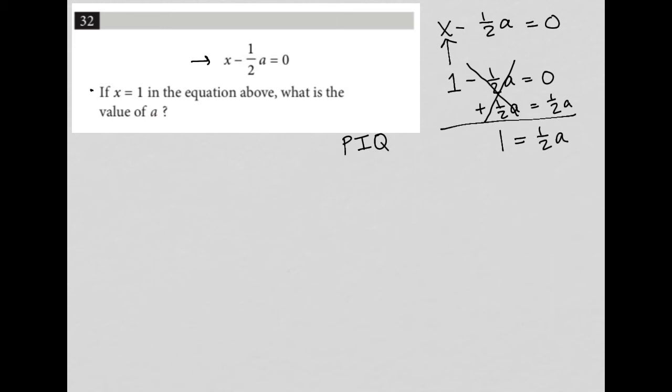Now I want to isolate a, so I'm going to multiply by the reciprocal of one-half, which is two over one. I need to multiply both sides of my equation by that two over one.